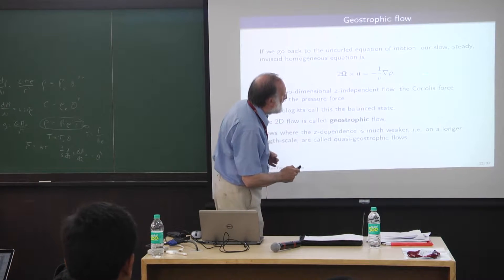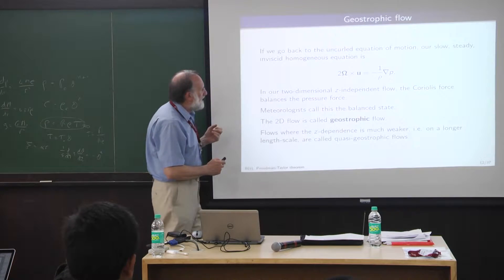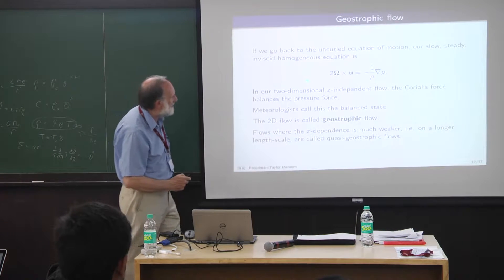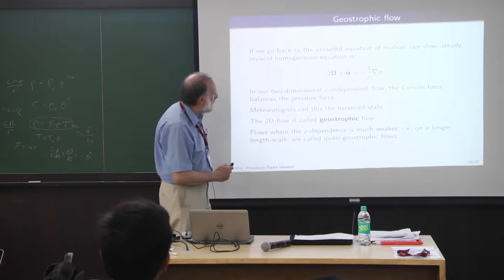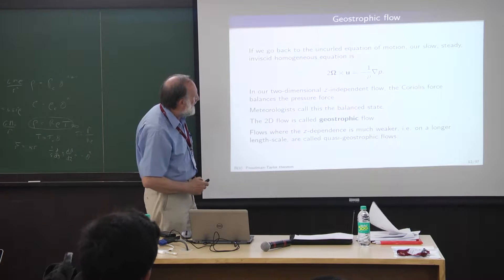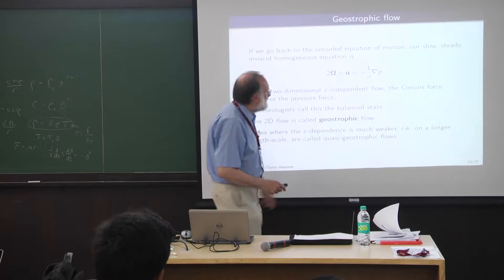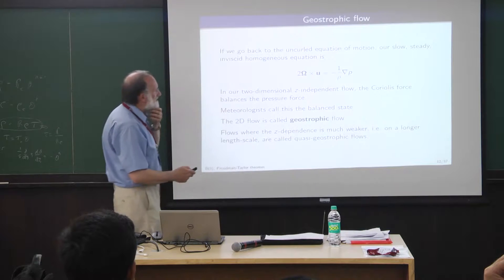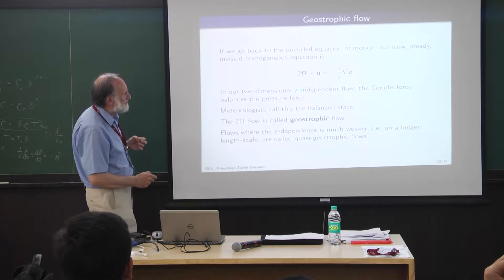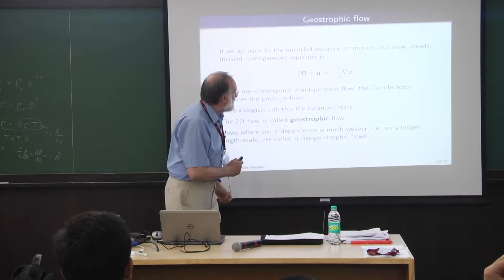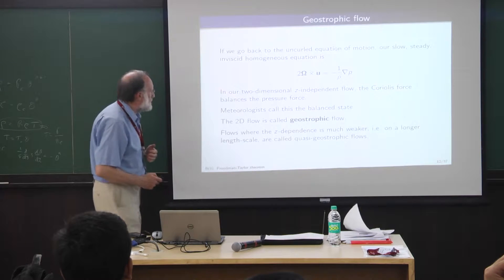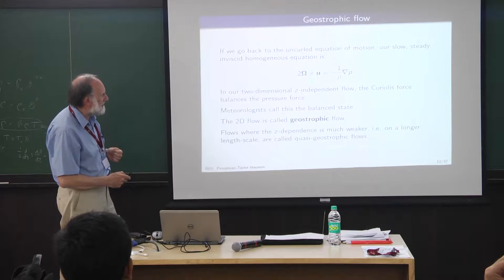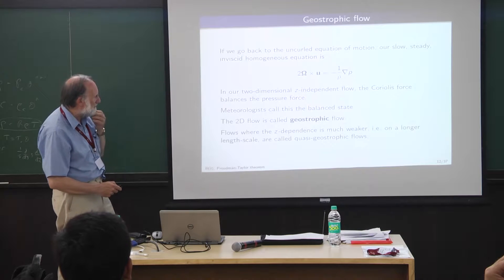We're omitting the Lorentz force, and we're in the slow and steady regime — omitting inertia in the low Rossby number approximation. There's no inertia and no buoyancy. This is the simplest kind of balance you can get, and it's called the geostrophic balance. A flow satisfying this is called a geostrophic flow.